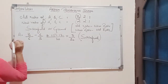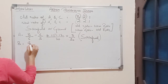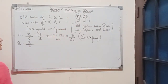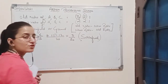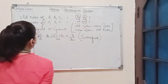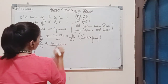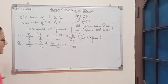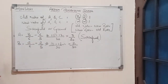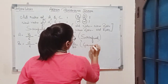Now for partner B: old share is 2/6 and new share is 2/5. Calculating this gives minus 2/30, indicating that B's old ratio is less than new ratio. This means B has gained 2/30th share of profit. This is a gaining ratio.